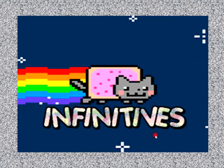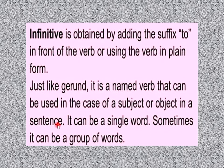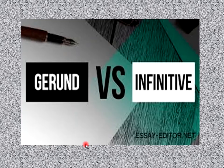Now let's move on to infinitives. An infinitive is obtained by adding the suffix 'to' in front of the verb, or using the verb in plain form. Just like a gerund, it is a verb form that can be used as a subject or object in a sentence. It can be a single word, or sometimes a group of words.